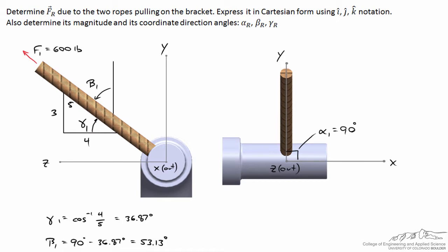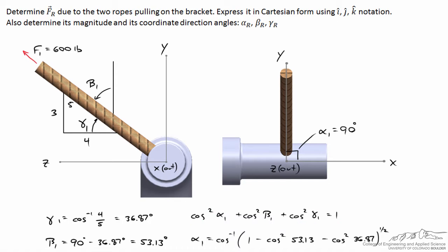There's a trigonometric relationship that relates alpha, beta, and gamma: the sum of the cosine squared of each angle equals one. This means once we know gamma one and beta one, there's only one value alpha one can take. From the side view, alpha one ought to be 90 degrees by inspection, and indeed when we solve it mathematically using this identity we confirm alpha one equals 90 degrees. Finding these angles for rope one is a bit excessive since we already know the rope is in the y-z plane, but it'll be useful when we move to rope two.